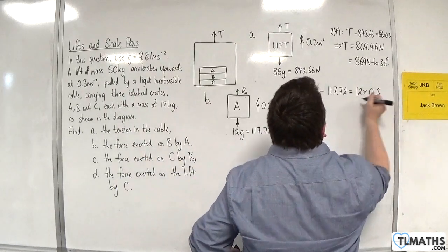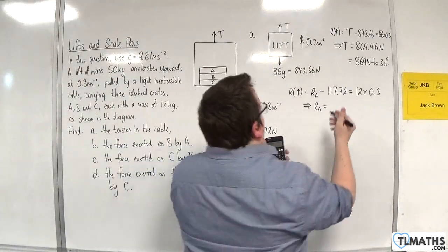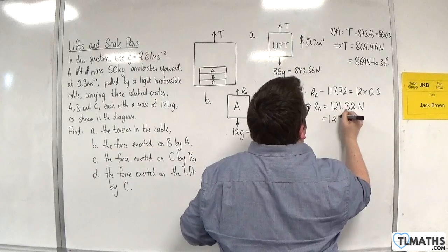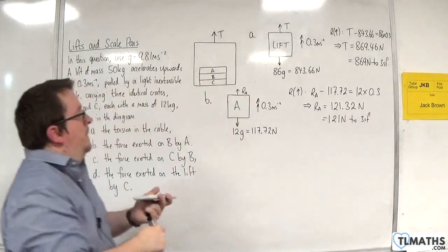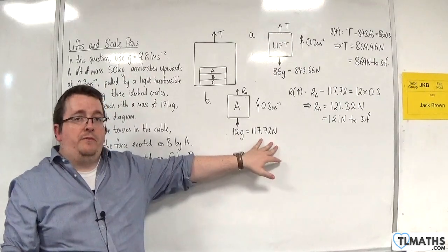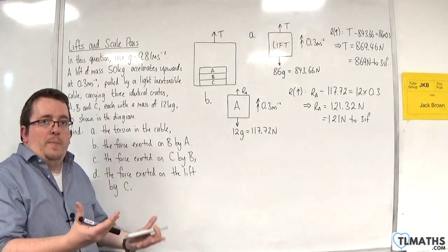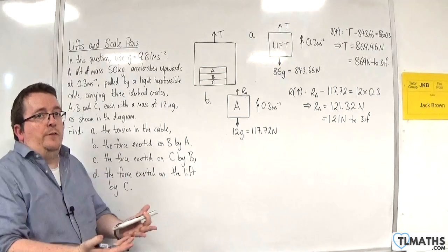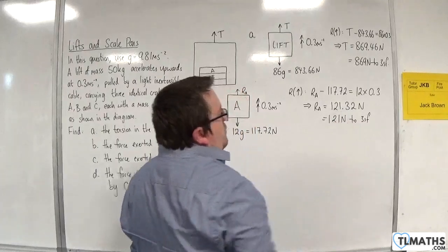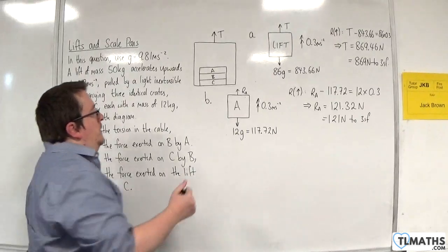So 12 times 0.3, and we should get 121.32 newtons, which is 121 newtons to three significant figures. So essentially, A has a weight of 117.72 newtons. But as you're going up in a lift, what you feel is that you suddenly feel a bit heavier. And so you're getting pressed down to the ground. So what's happening is that A is being pressed down towards B. And that's why the normal reaction force that we're getting here is slightly larger than the weight. So that's what's felt.